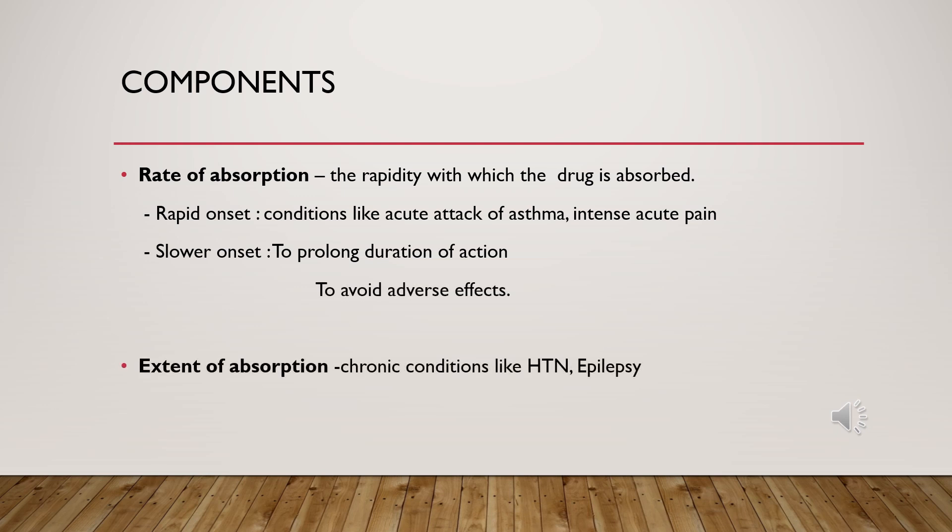There are two components to bioavailability: the rate of absorption and the extent of absorption. Rate of absorption is important in acute conditions where it is critical for the drug to reach the site of action as quickly as possible — it is essentially the rapidity with which a drug gets absorbed. Extent of absorption matters in chronic conditions, such as epilepsy or hypertension, where the drug must reach and maintain a certain concentration.